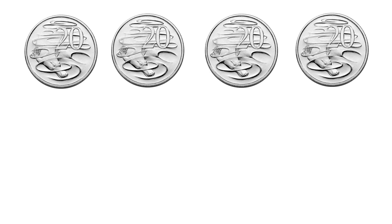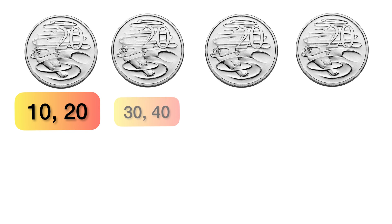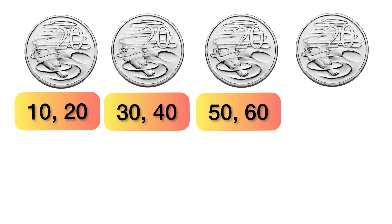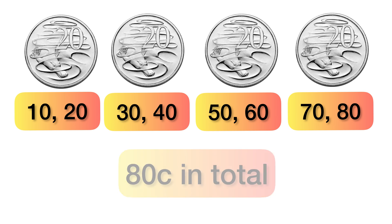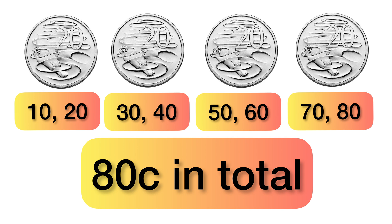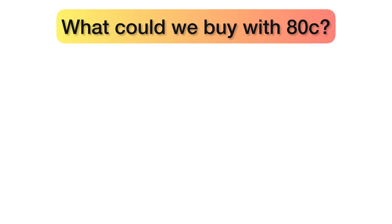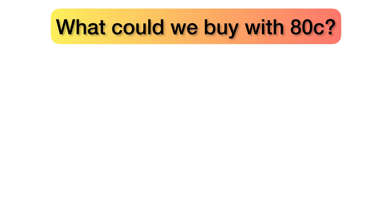Because two 10 cent coins make 20 cents. Let's go. 10, 20, 30, 40, 50, 60, 70, 80. 80 cents. We arrived at the same answer using two different strategies. What could we buy with 80 cents?